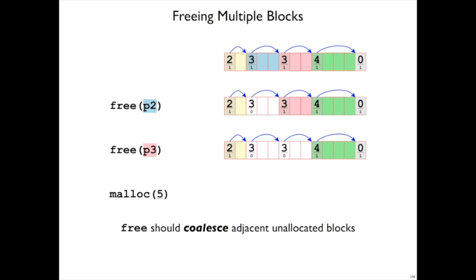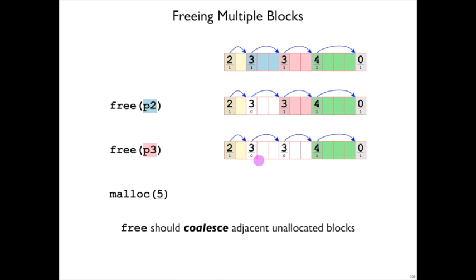That merging process is called coalescing. And in this case, what we would like is for free of P3, free of the pink block, to coalesce that unallocated block with the previous block, making a block size 6.